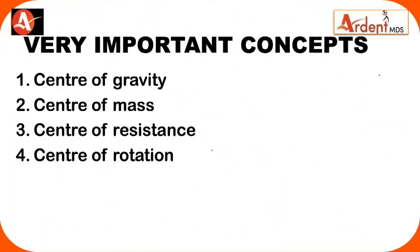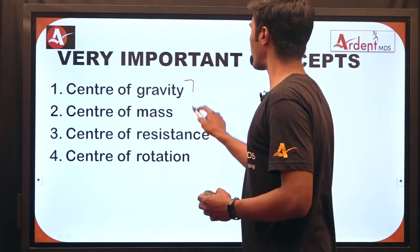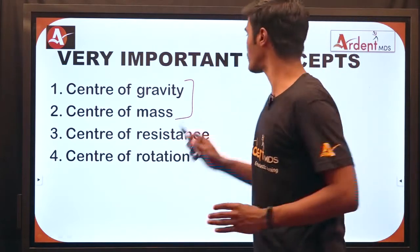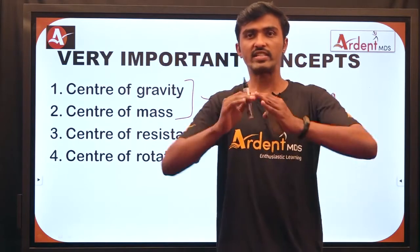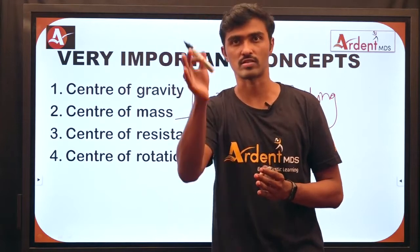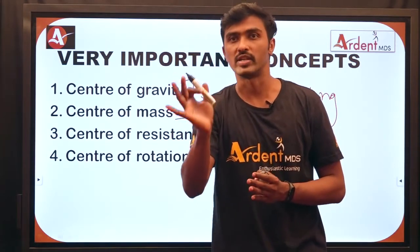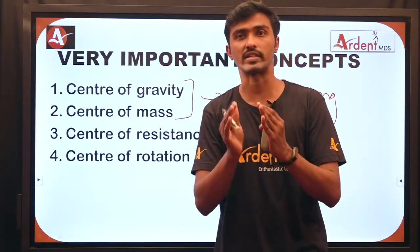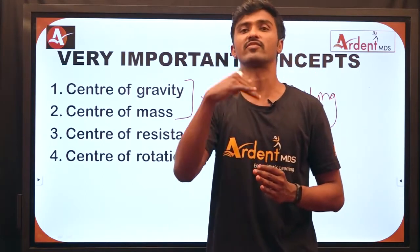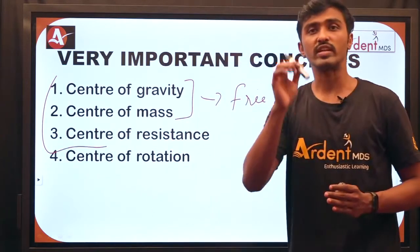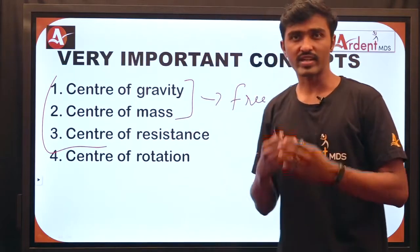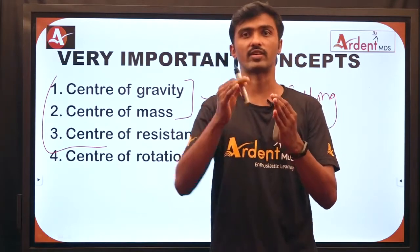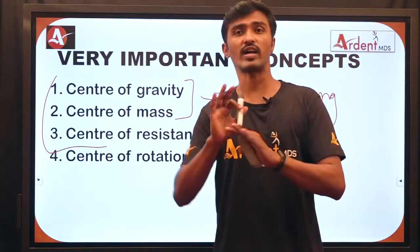Let us get to know some basics of biomechanics: we have center of gravity, center of mass, center of resistance, and center of rotation. The center of gravity and center of mass are applicable for free-falling objects — objects that are not constrained or restrained by other structures and simply fall freely. Any object has a point where the entire mass is concentrated; for free-falling objects this is called center of gravity or center of mass.